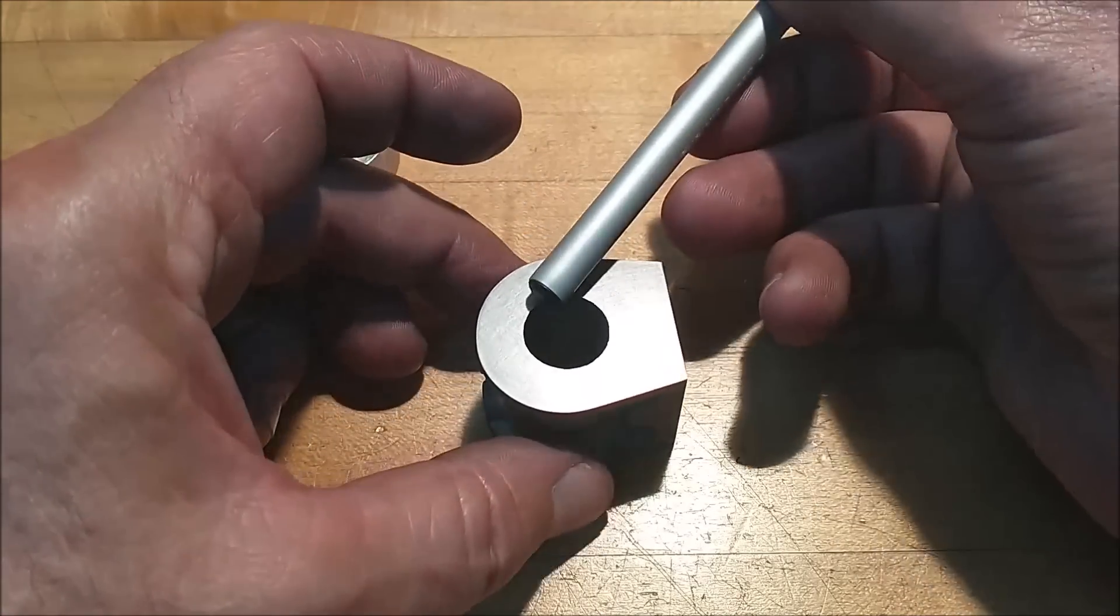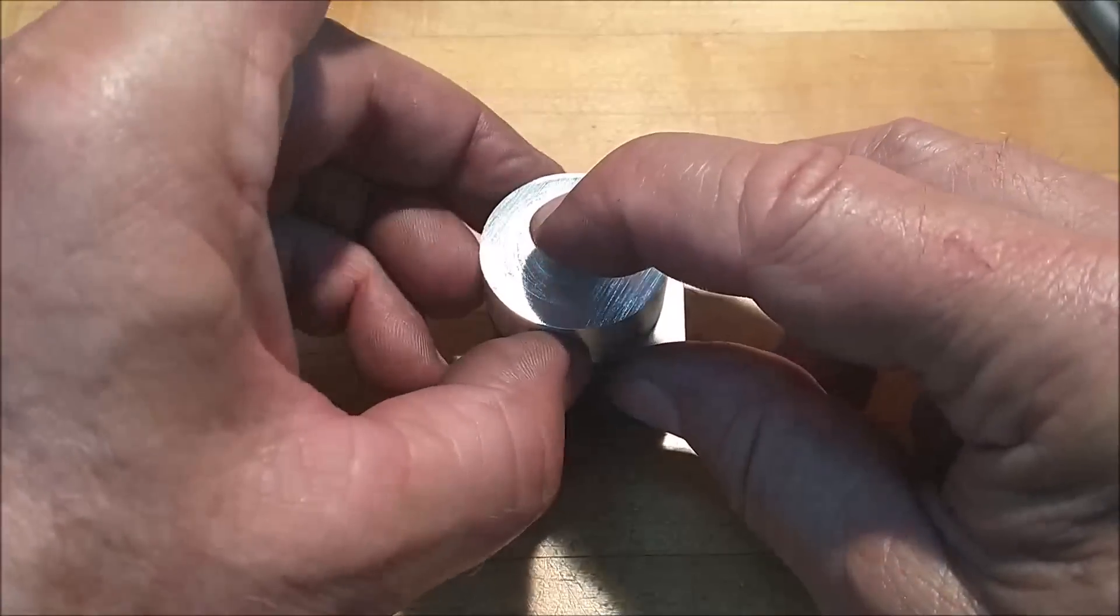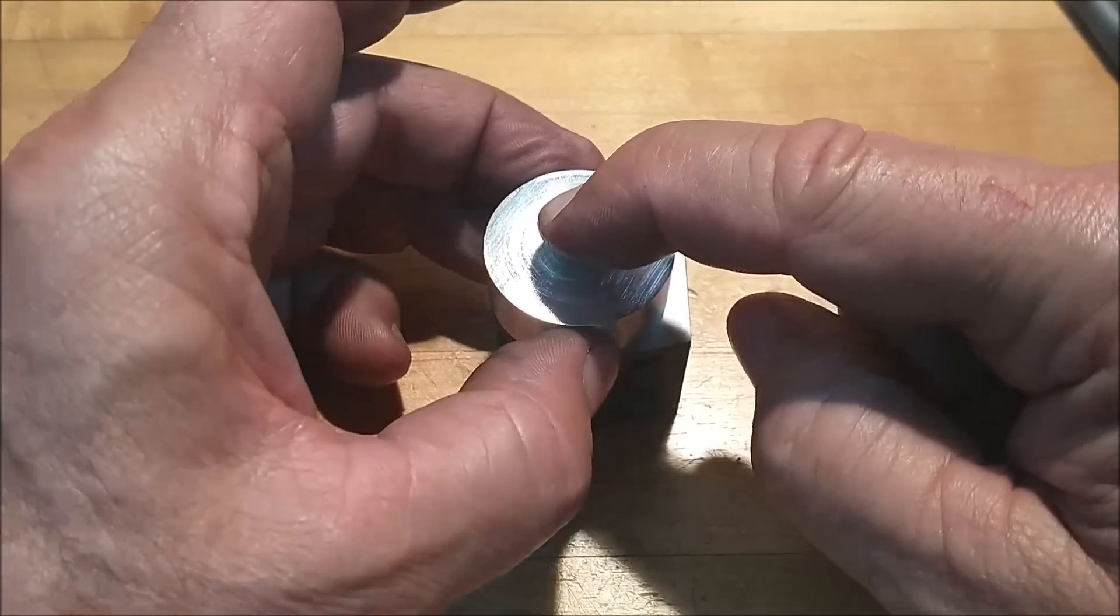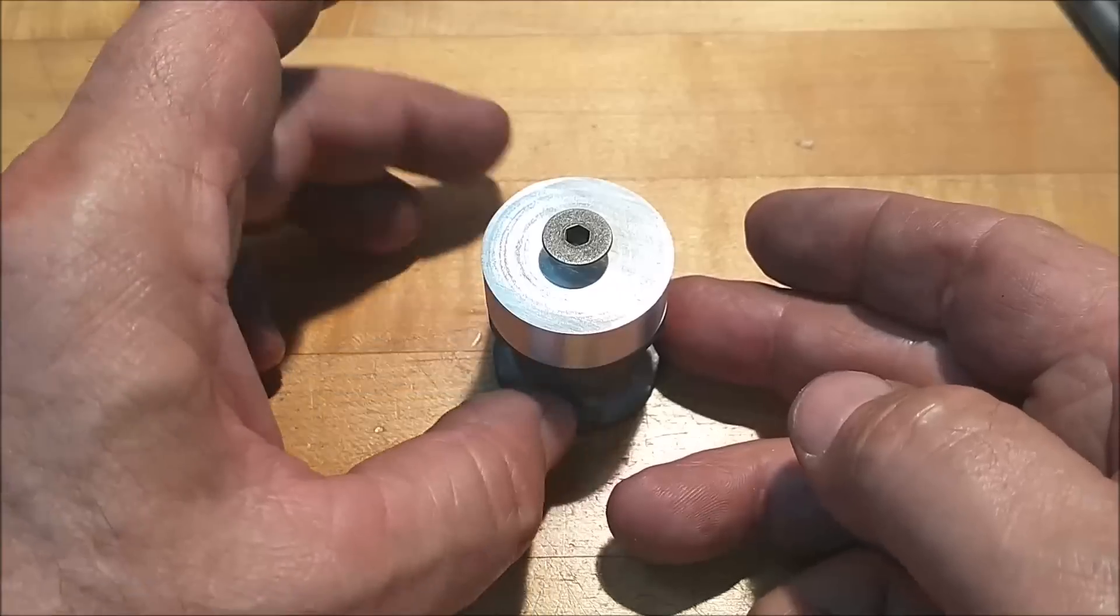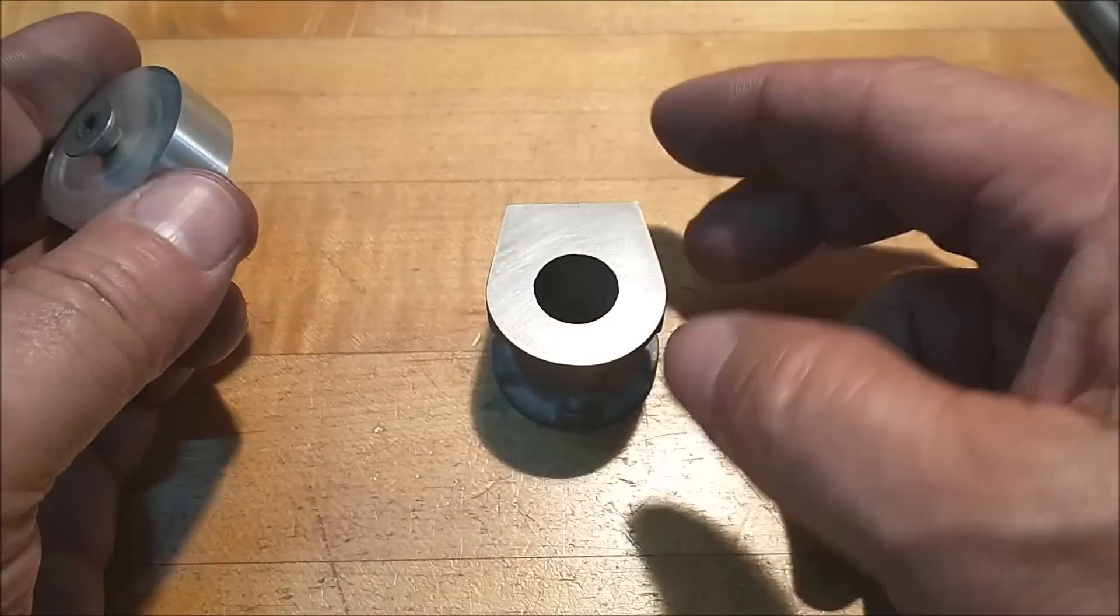But then moving back and forth, I'm not going to run an indicator around the outside casting. I'm going to put this on here, line it up until it's flush, and indicate this. That'll give me my x-axis, and the y-axis will be done with an edge finder.